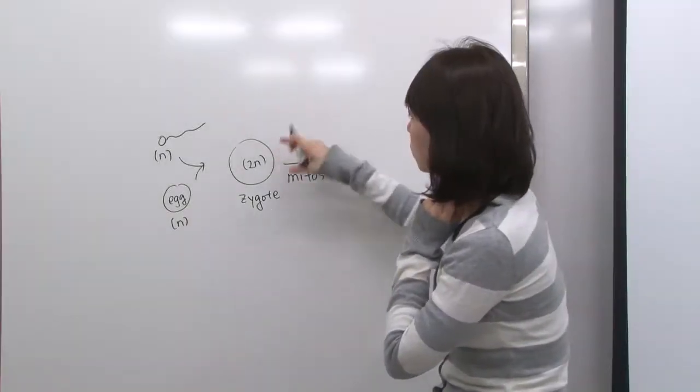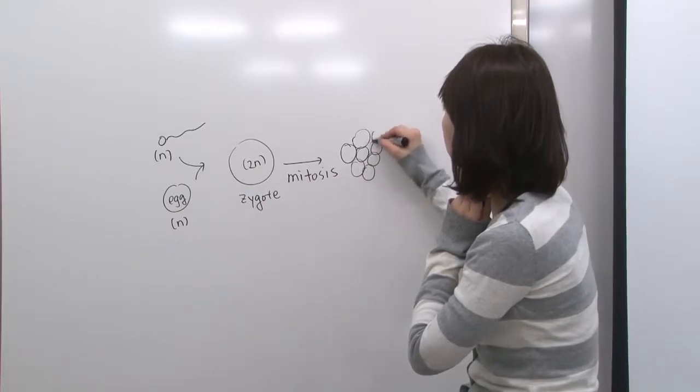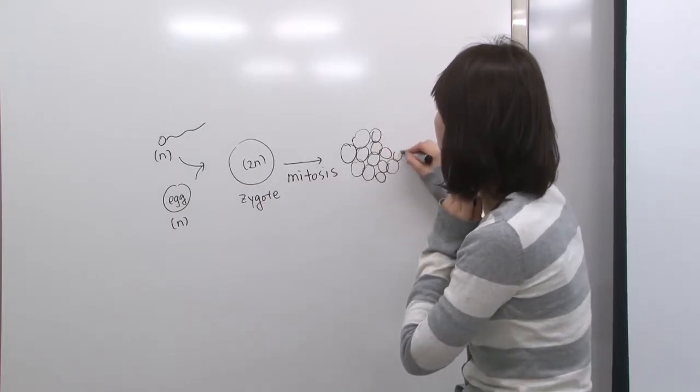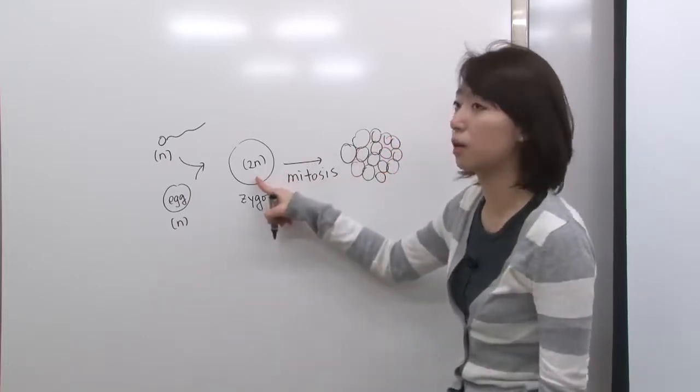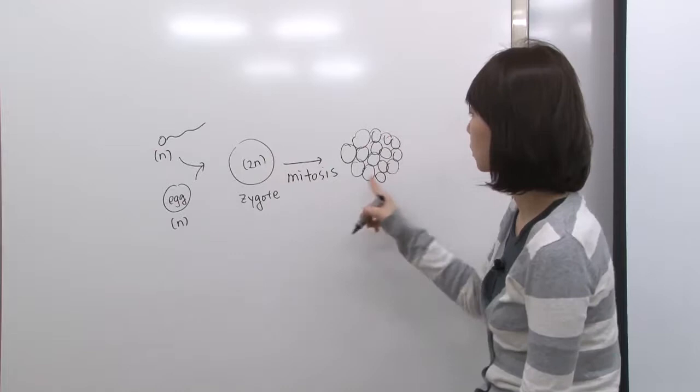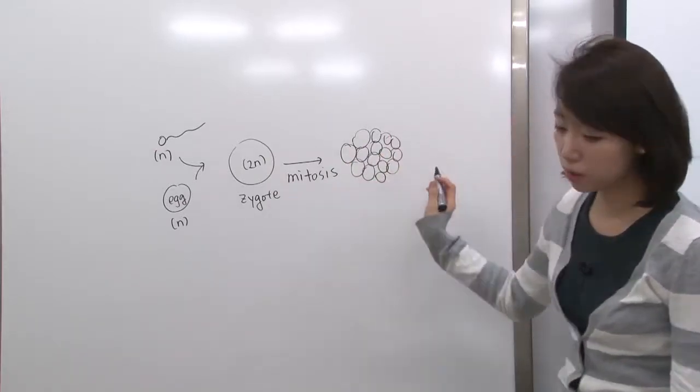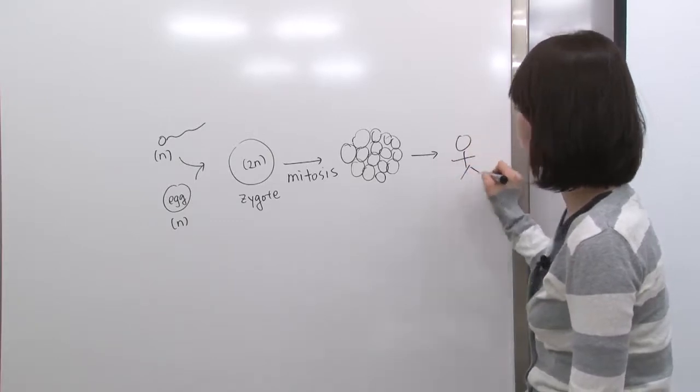So resulting cells are going to actually divide into multiple cells like this. When this occurs, mitosis, all these cells have the same DNA information as the preceding cell, as a zygote. So this is actually the result of mitosis, and you grow this into baby, right? Multicellular organism.